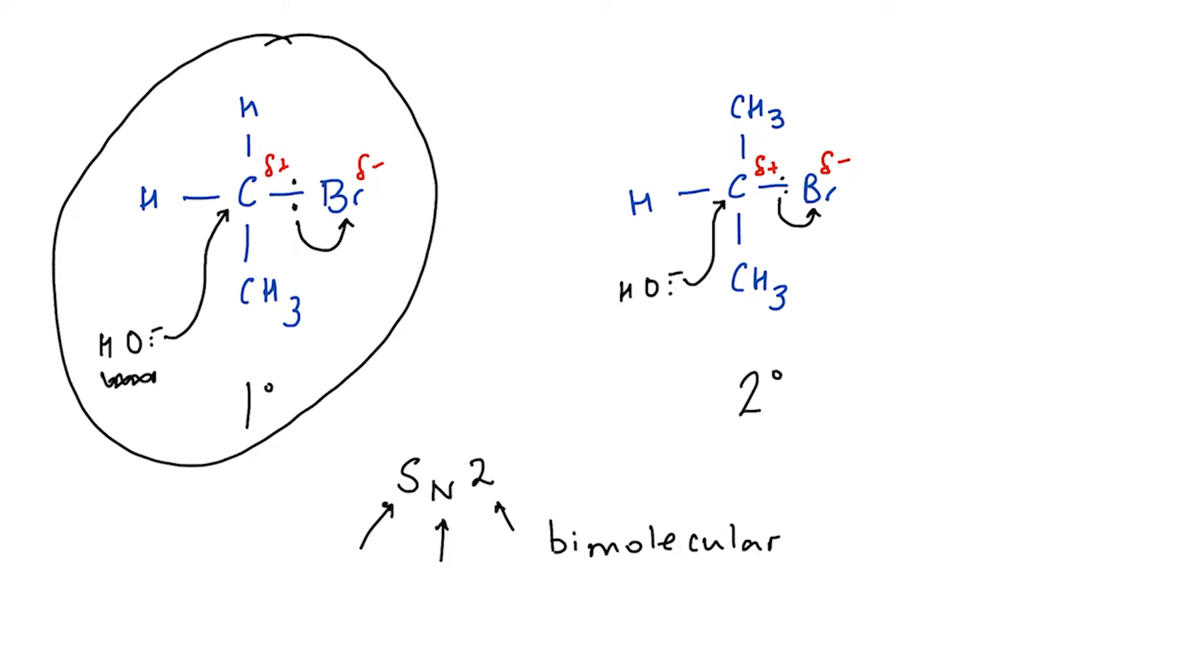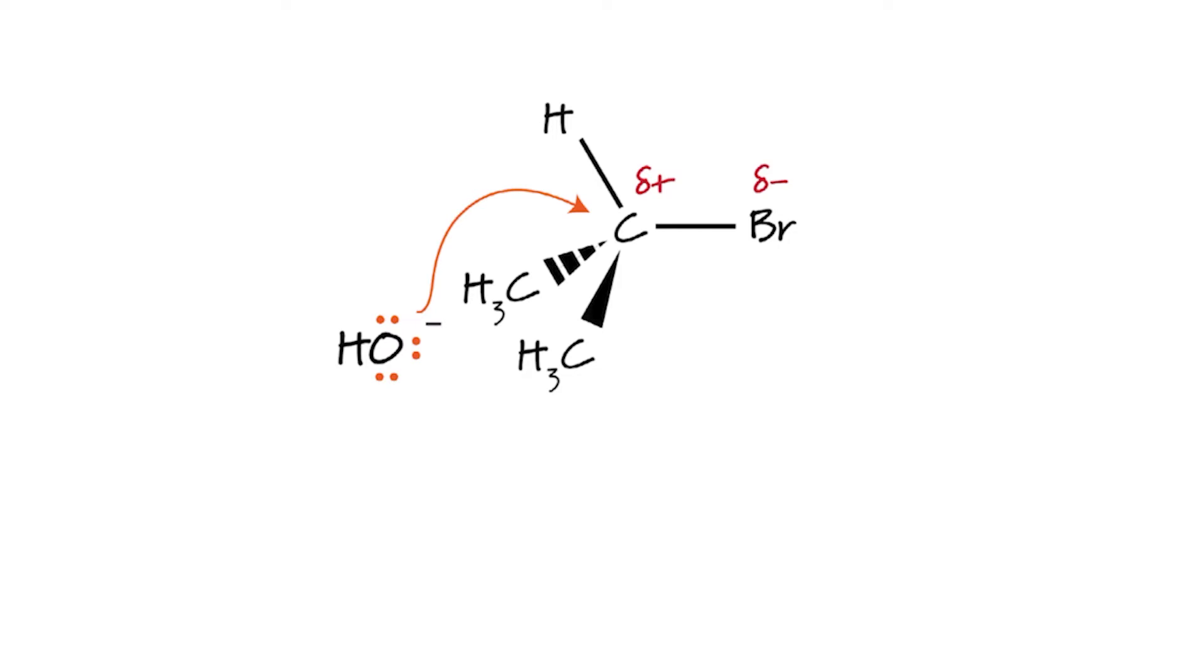Well, there are a number of factors we need to consider. As with many things in chemistry, this is not cut-and-dried. Because X happens, Y must be the result. Let's consider the first part of this mechanism, where the nucleophile attacks the delta-positive carbon. If we draw this out in 3D, you might be able to see that the presence of more than one alkyl group, particularly if those alkyl groups are bigger than a methyl group, sterically hinder the attack.